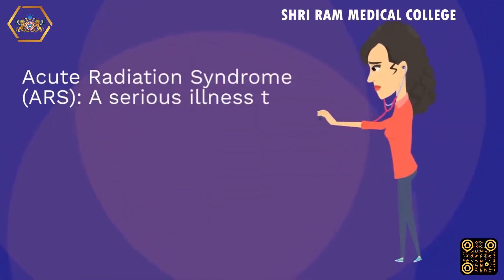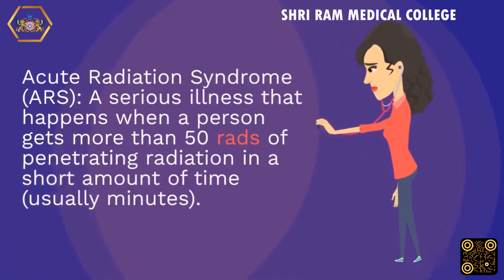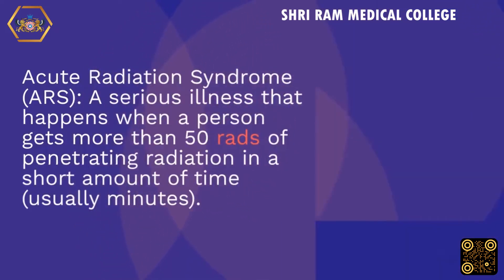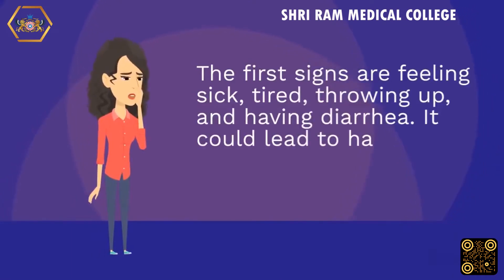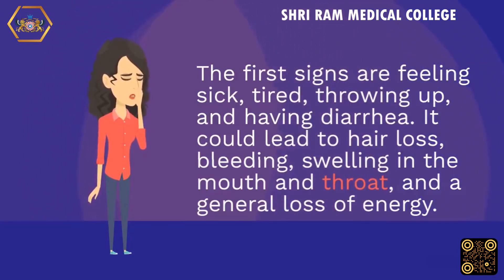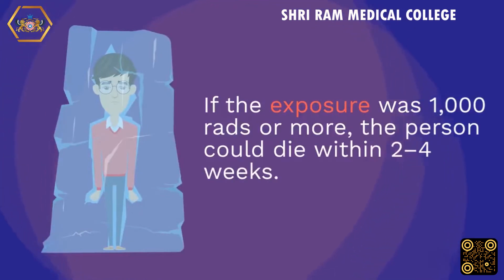Acute Radiation Syndrome (ARS): a serious illness that happens when a person gets more than 50 rads of penetrating radiation in a short amount of time, usually minutes. The first signs are feeling sick, tired, throwing up, and having diarrhea. It could lead to hair loss, bleeding, swelling in the mouth and throat, and a general loss of energy. If the exposure was 1,000 rads or more, the person could die within 2 to 4 weeks.